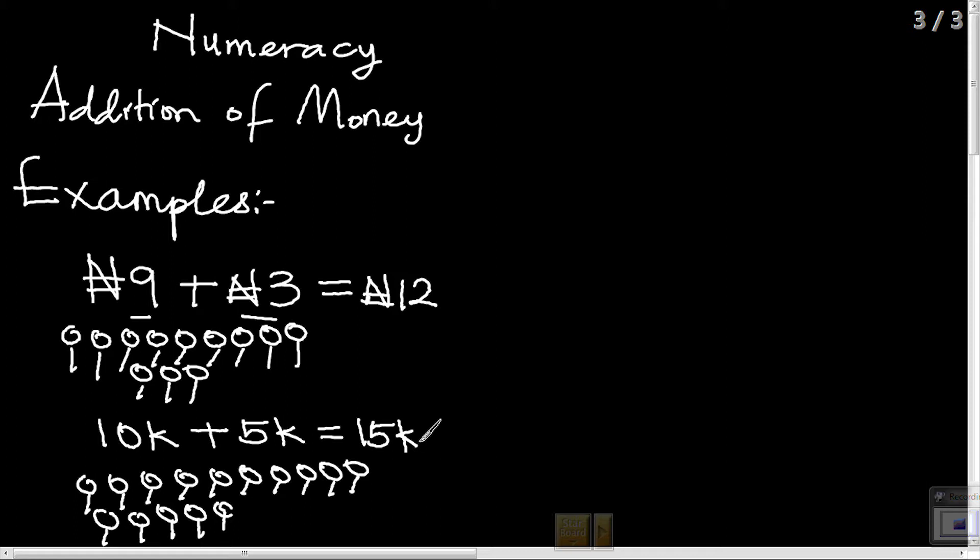Another example for you: 8 Naira. 1, 2, 3, 4, 5, 6, 7, 8. Let's count it together kids: 1, 2, 3, 4, 5, 6, 7, 8, 9, 10, 11, 12. 4 Naira plus 8 Naira gives 12 Naira.